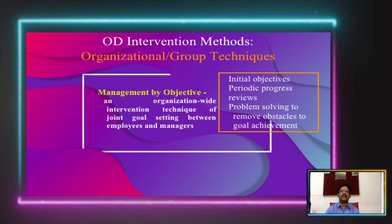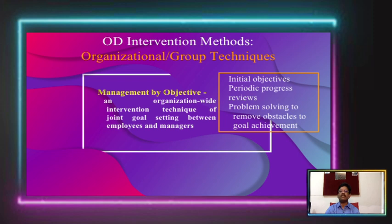Initial objectives are set, periodic progress is monitored, reviews take place, and the process works to remove obstacles to goal achievement. Management by Objectives was introduced by Peter Drucker as a strategy for organizational development. When we fix objectives and goals, it is better to consult employees and ensure they are involved and participate in goal fixation and finalization. Once they understand and agree, they will try to achieve organizational goals, leading to development and change with less resistance.